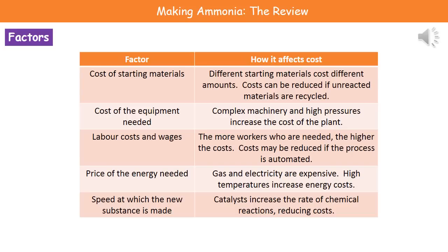Welcome to our review on making ammonia. The first thing we need to consider when thinking about any chemical production are the factors that are going to affect the cost. There are five factors we need to remember in terms of their ability to affect the cost of the chemical we're producing.